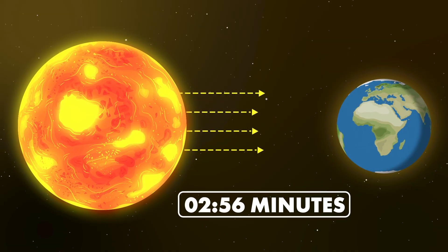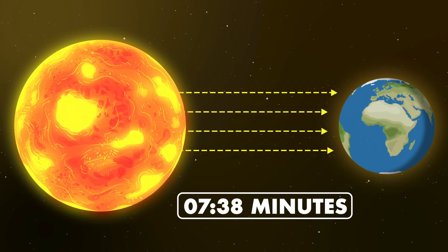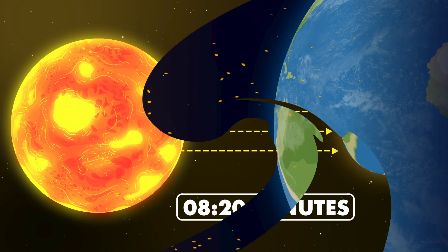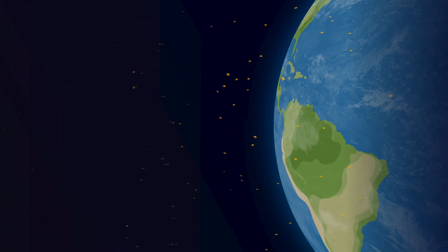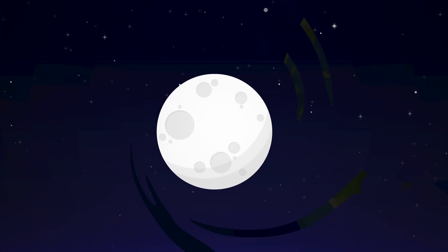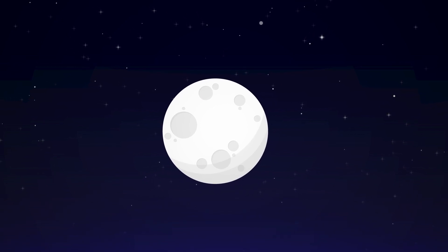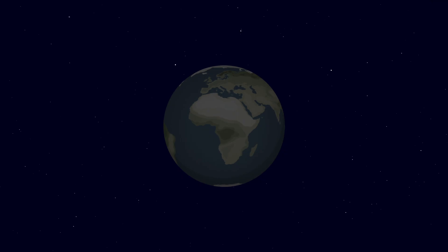It takes about 8 minutes and 20 seconds for light to travel from the sun to the surface of Earth. Only after the last photons reach our planet would the sun actually blink out of the sky. After that, a twilight glow would linger overhead as photons reflect off the moon and other planets. Once that twilight fades, our planet would finally sink into darkness.